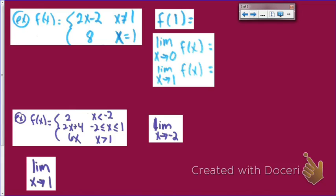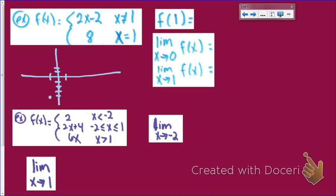Now the last ones are piecewise functions — where the graph is one type of function in one place and a different kind somewhere else, as you learned in Algebra 2. To help visualize this, I'll draw the graph: it's the function 2x minus 2, with a y-intercept of negative 2 and slope of 2, everywhere except where x equals 1. When x equals 1, the function actually equals 8, so there's a closed circle at the point (1, 8) and an open circle where the line would cross x equals 1. When x actually equals 1, the y value is 8.